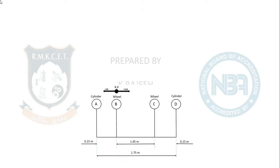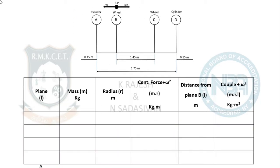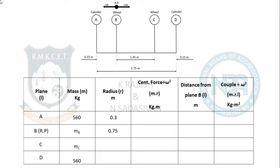Now force and couple tabulation. Planes are A, B, C, D — with B as reference plane. Mass for A and D is 560 kg each; masses for B and C are unknown. Crank radius (small r) is 0.3 m; radius of rotation of the balancing mass is 0.75 m. Multiplying: 560 × 0.3 = 168 for A and D; balancing mass column entries are 0.75 MB and 0.75 MC.